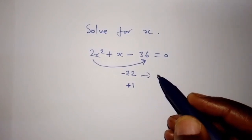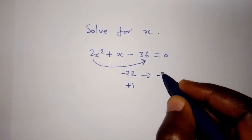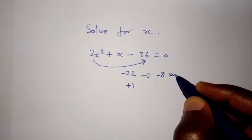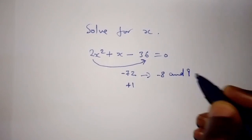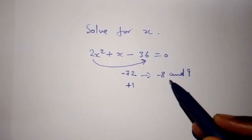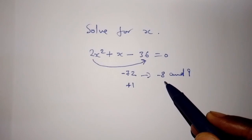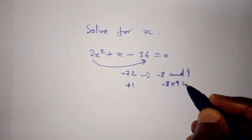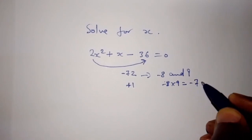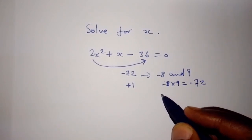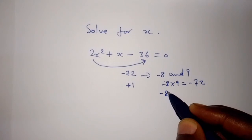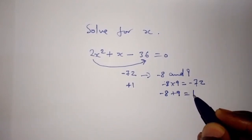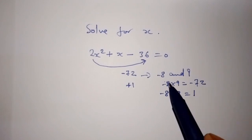We can take the two numbers as negative 8 and 9. When we multiply negative 8 times 9, we get negative 72. And when we add negative 8 plus 9, we end up with 1. So we are going to take these two numbers.